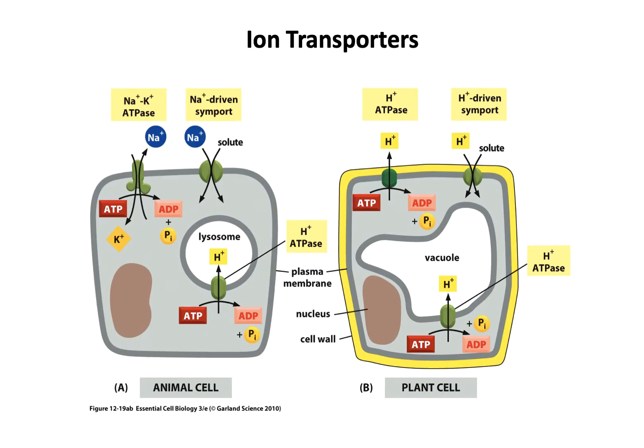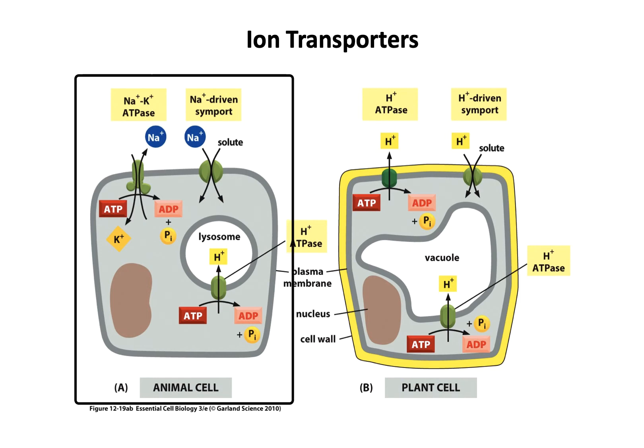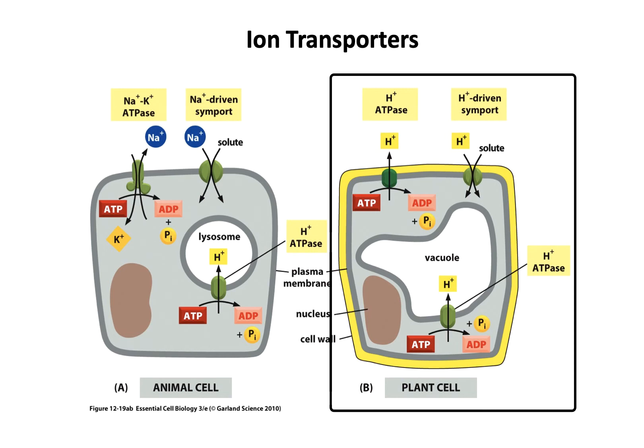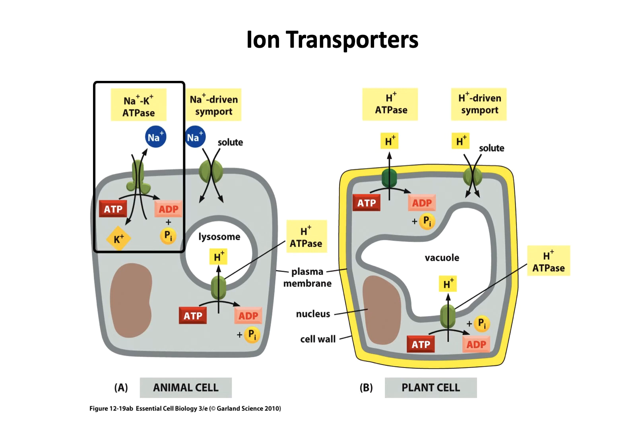This whole system is driven by the sodium-potassium pump, which requires ATP. Ion transporters turn out to be very important. In animal cells, it's mainly potassium, sodium, and proton pumps that are important. In plants, it's primarily proton pumps. In animal cells, you have a sodium-potassium transporter requiring ATP, and then a sodium-driven symport with a solute such as glucose going into the cell.